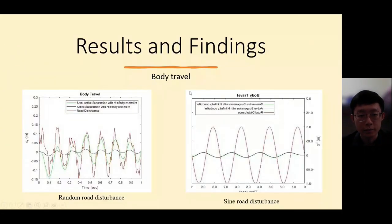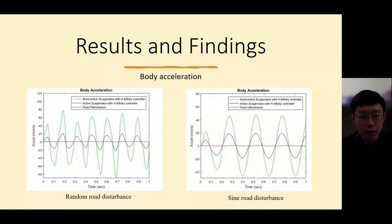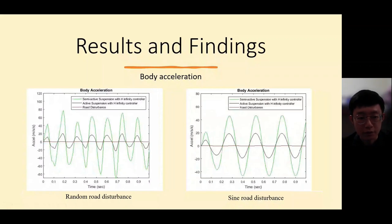For the results regarding body travel, from these two graphs we can see that the active suspension system has much better performance compared to the semi-active suspension system, because the amplitude of the graph for the active system is much lower. This means the body travel for the active suspension system is very minor. For body acceleration, the active suspension system also has better performance as the amplitude of both graphs for the active system is much lower compared to the semi-active suspension system.